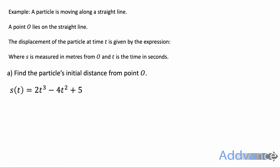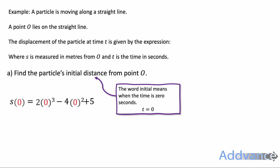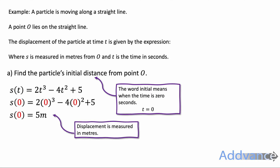Part A: find the particle's initial distance from point O. The word 'initial' means when the time is zero seconds — it just means the start. So we substitute t = 0 into the displacement equation. s(0) = 2(0)³ − 4(0)² + 5. Those first two terms are zero, so s(0) = 5. The answer is 5 metres — remember to include the units.